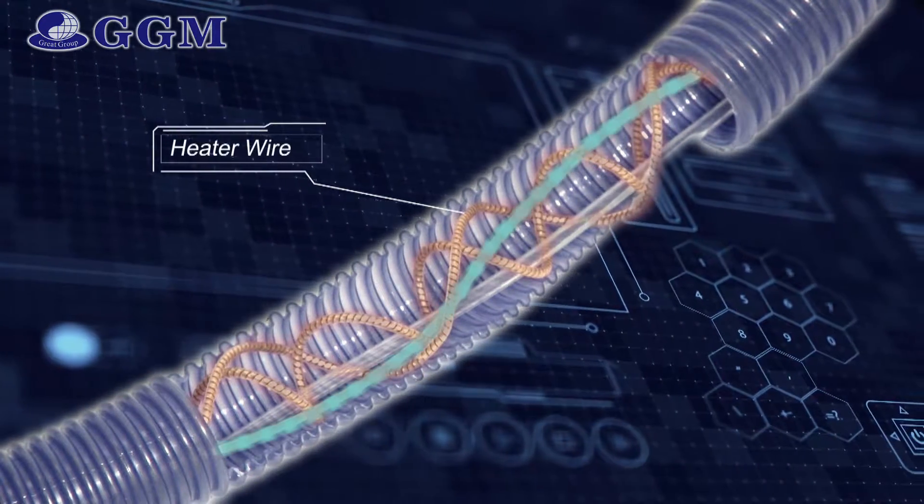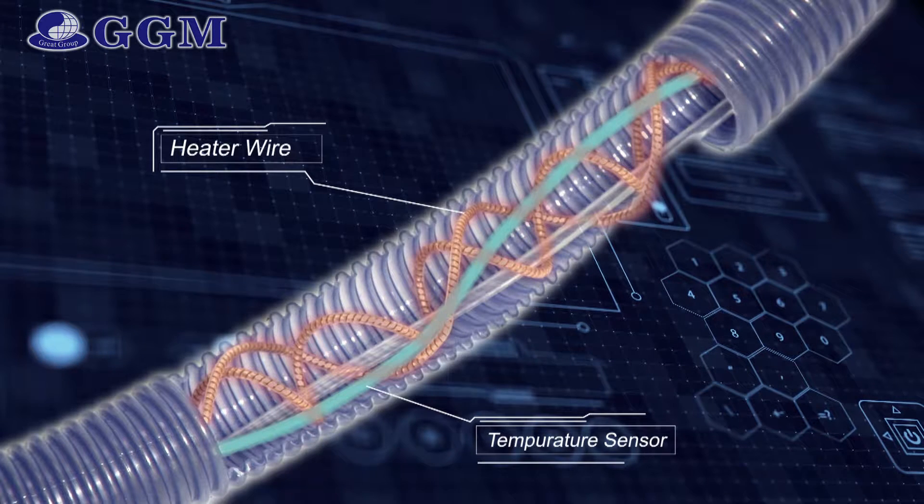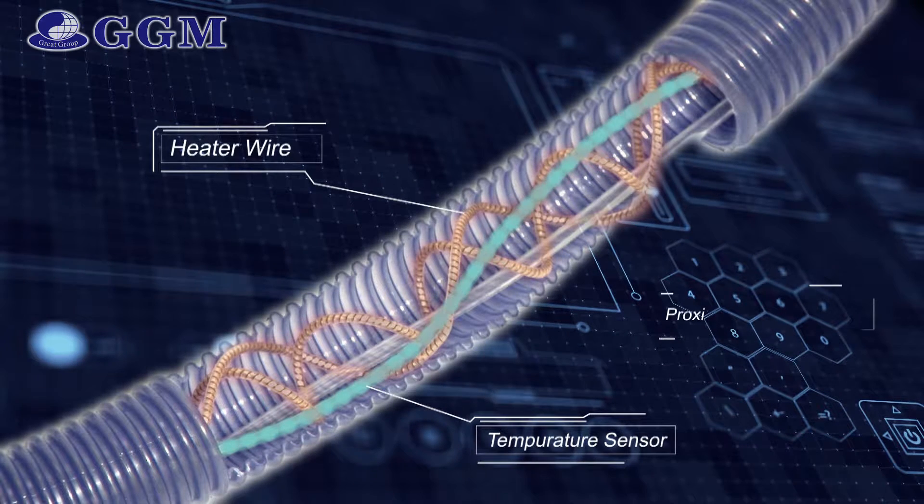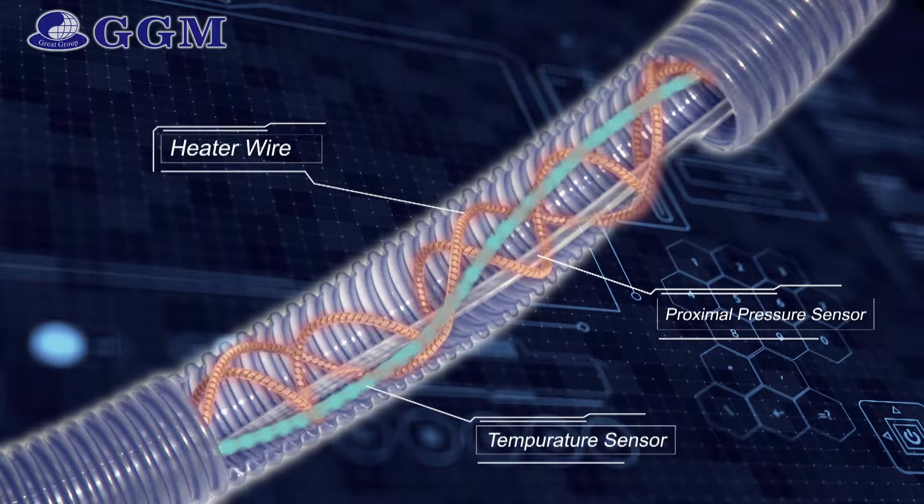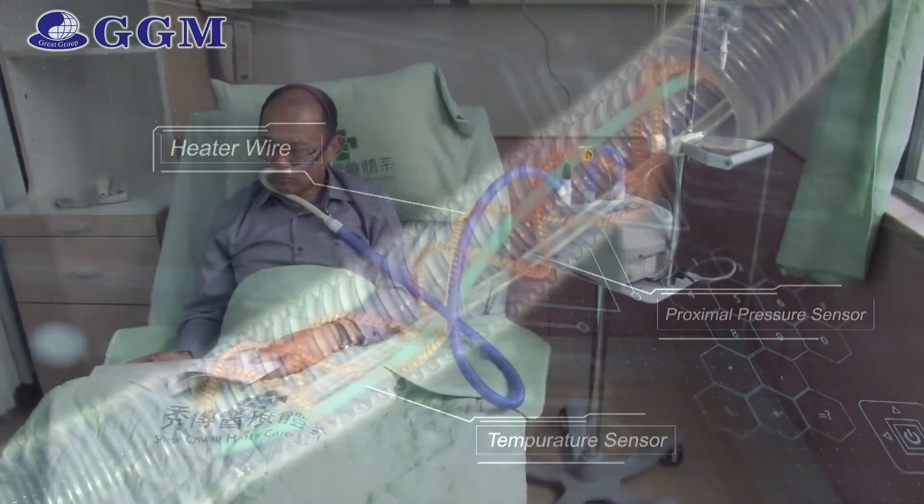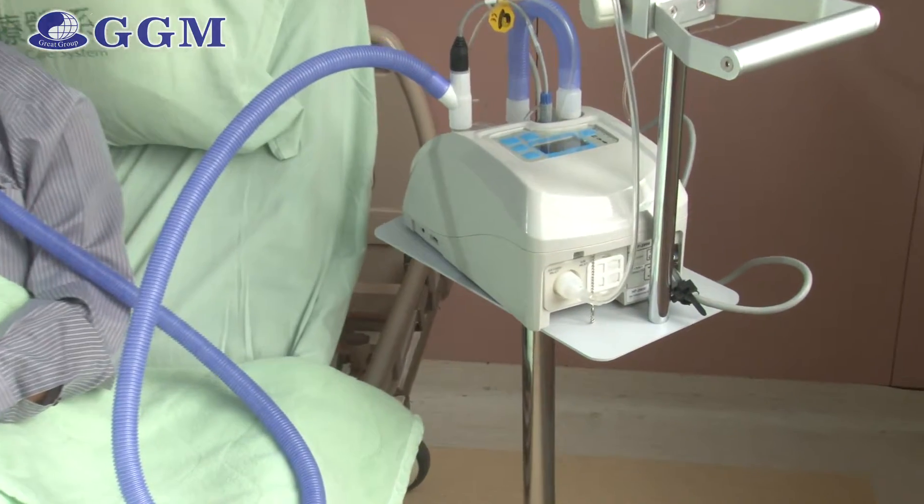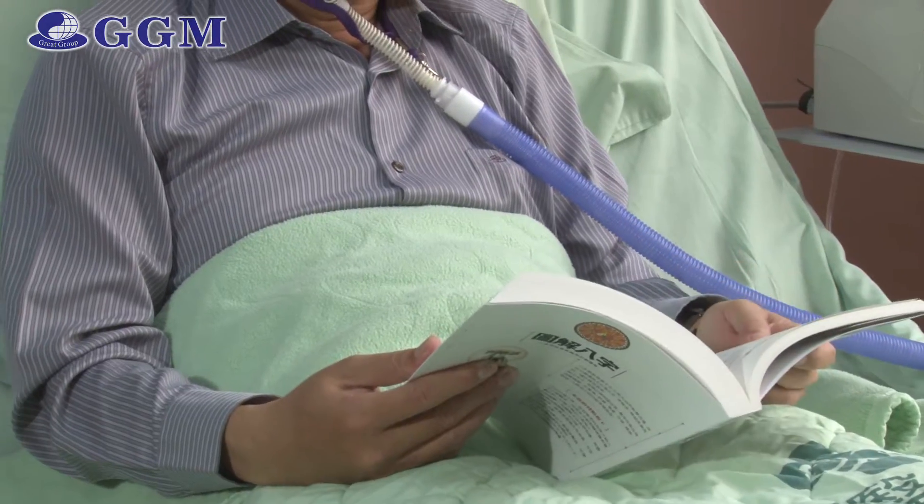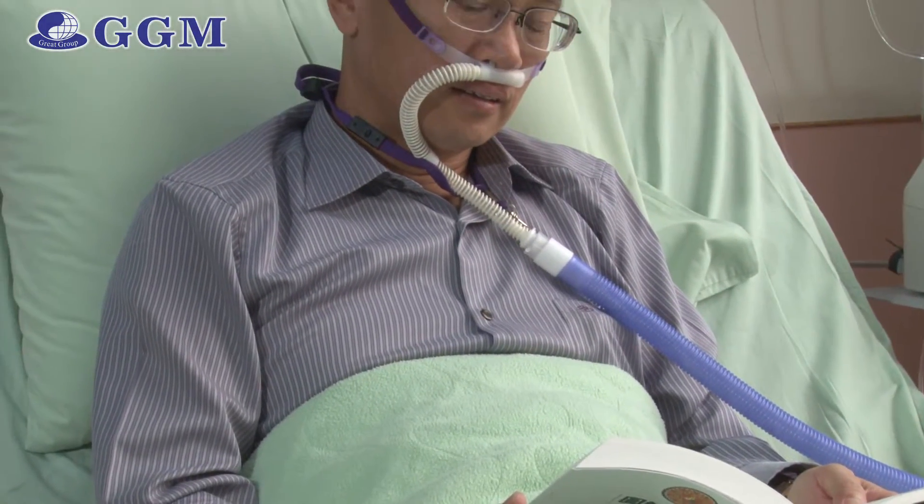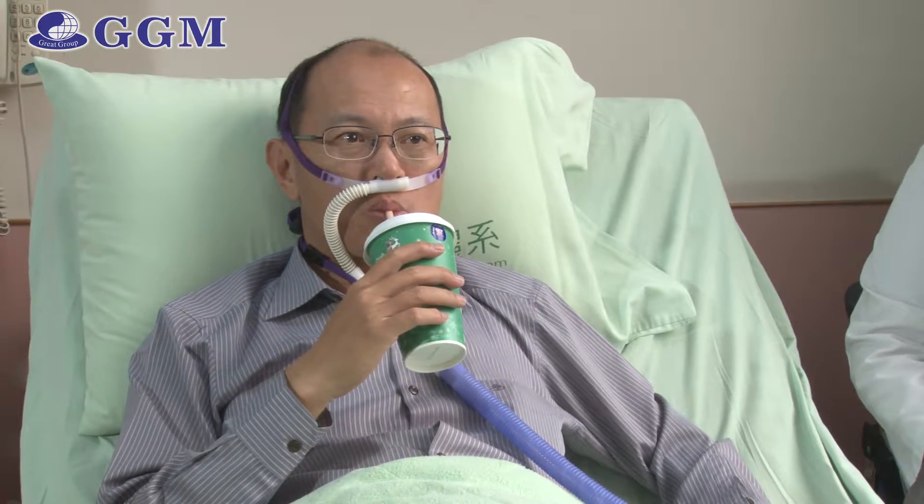A temperature probe and pressure line are also installed in the tube, enabling humidiflow to detect the airway temperature and proximal pressure. The humidiflow finally interacts with patients via our high-flow interface. It is ultimately comfortable, convenient and widely accepted by a full range of patients.